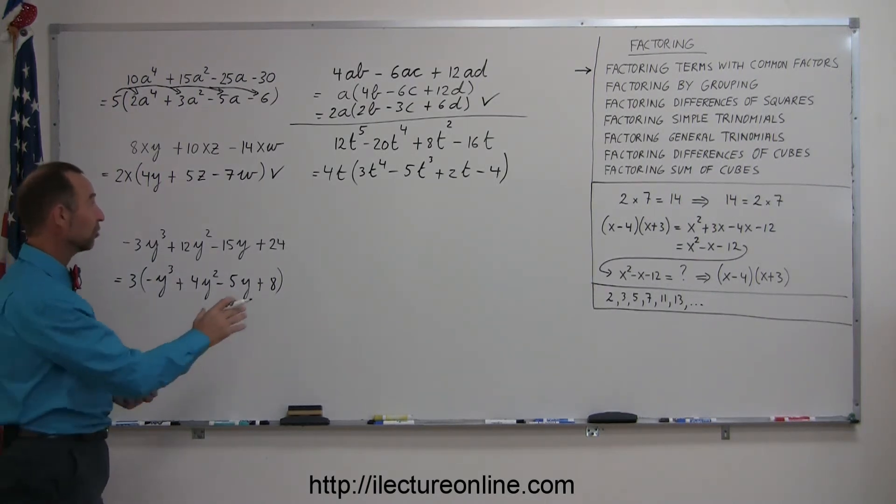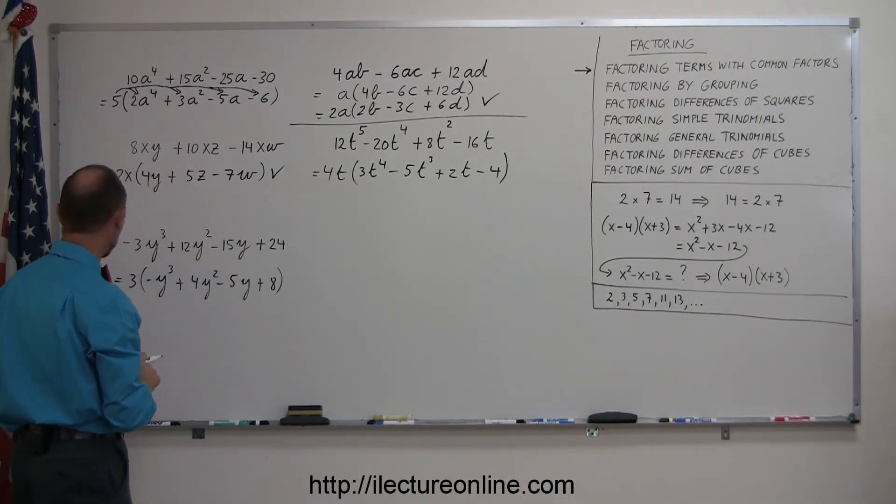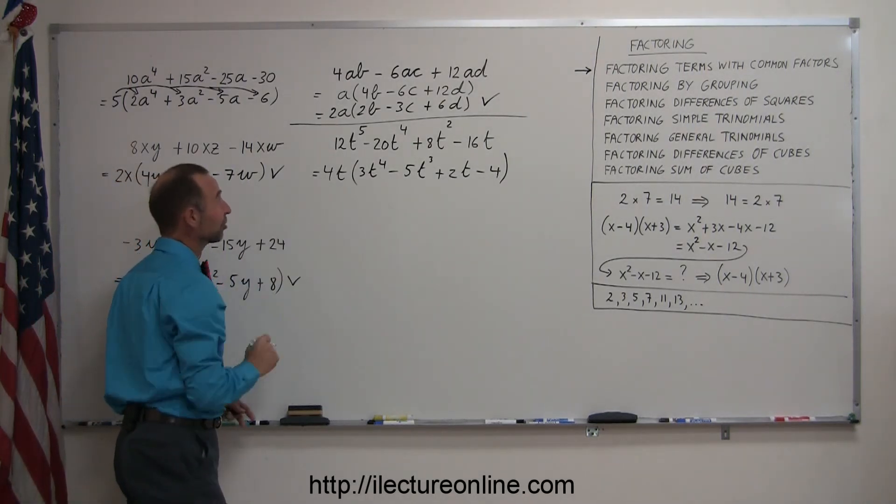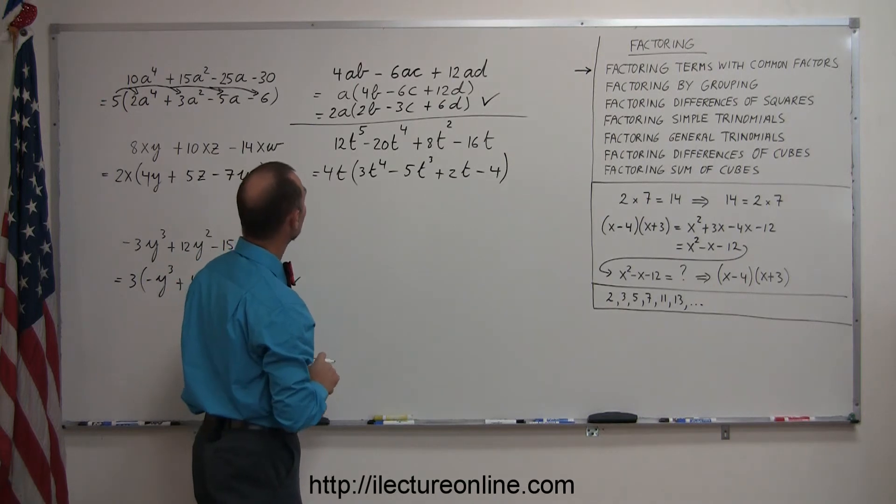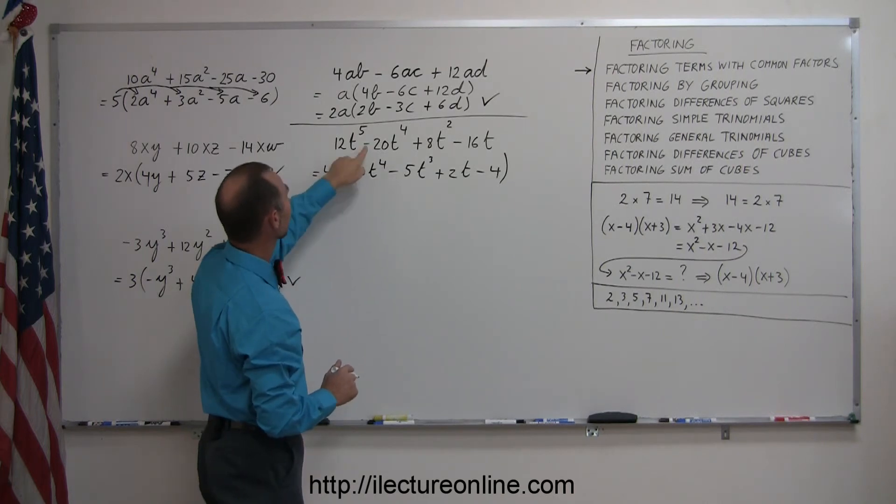Again, just to check, and I didn't check this one, I may want to go ahead and check that one as well, but if I multiply this out, I get 3 times minus y is minus 3y cubed, 3 times 4 is 12, 3 times minus 5 is 15, and 3 times 8 is 24, so again, this one is correct, and quickly checking this one here, let's see, we have 4t times 3t to the fourth, that's 4 times 3 is 12, t to the first times t to the fourth is t to the fifth, remember when you multiply variables, when the bases are the same, the variables the same, you just add the exponents.